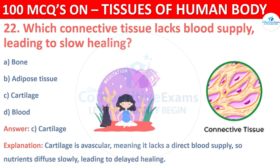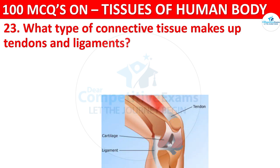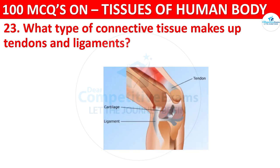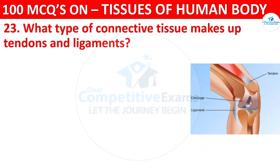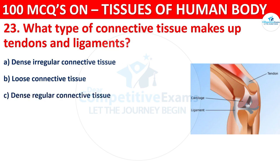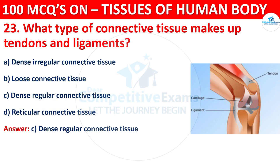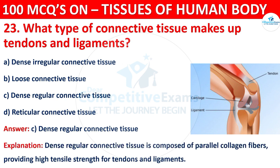Question number twenty-three: what type of connective tissue makes up tendons and ligaments? Options are dense irregular connective tissue, loose connective tissue, dense regular connective tissue, or reticular connective tissue. The correct answer is dense regular connective tissue, which is composed of parallel collagen fibers, providing high tensile strength for tendons and ligaments.